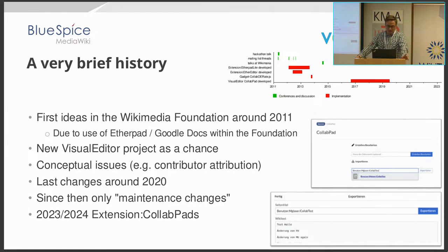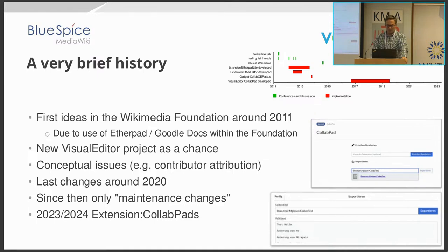So in 2023-24, the Hallewelt company picked up on that topic. We investigated the state first and then came up with a new extension. We called it CoLab Pads — plural in this case. We wanted to build upon that existing work and improve on several topics and allow simultaneous editing in a regular MediaWiki installation, because we thought this is probably an interesting feature to a lot of people. The conceptual issues that the Wikimedia Foundation may have had are not necessarily the ones that we have — we do not share the same mission, so we could probably live with a couple of those issues.